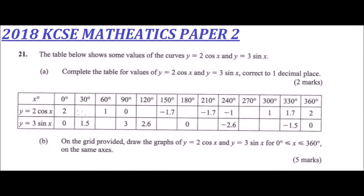Here you use your calculator and substitute the value of x. We are given the row of x. These are two functions: y = 2cos(x) and y = 3sin(x). To fill the table, for example when x = 30, you find the cosine of 30 and multiply by 2.